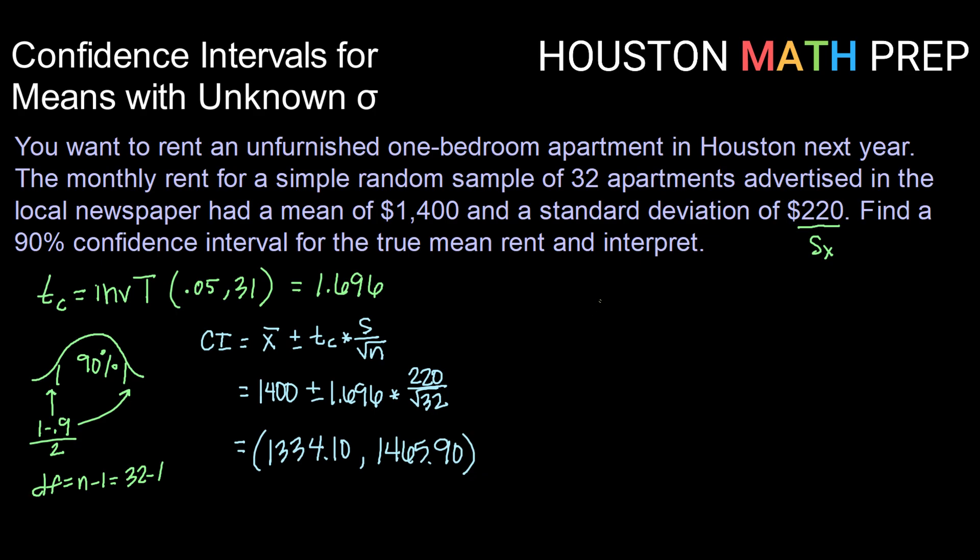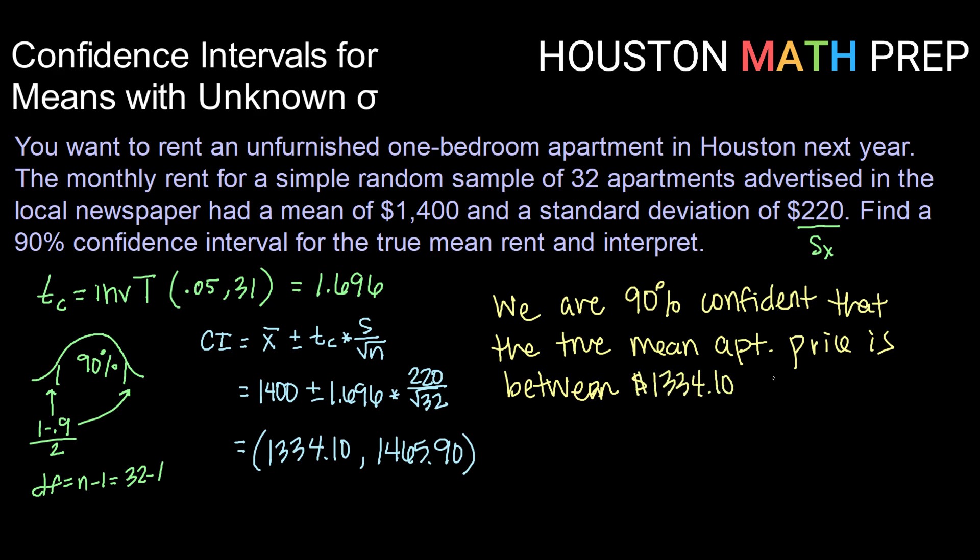Now, we'll go ahead and report that using our confidence level, our interval, and the context. We are, in this case, 90% confident that the true mean apartment price is between $1,334.10 and $1,465.90.